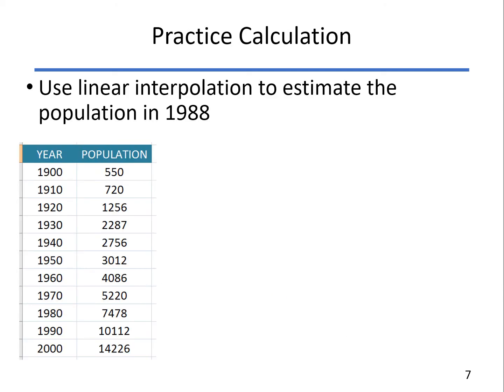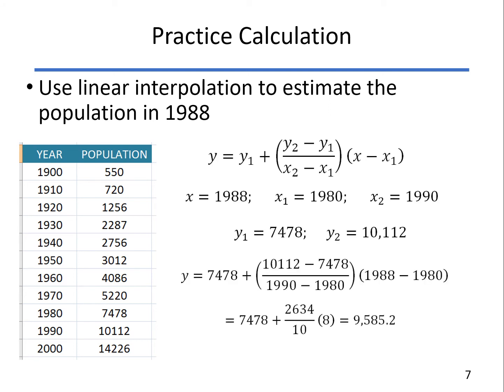Here's a similar one. Let's look at 1988. In 1980, the population was 7478. In 1990, it was a little over 10,000. So plugging those values in and rounding it off to the nearest integer, we estimate that the population in 1988 was 9,585.